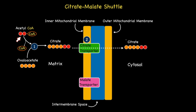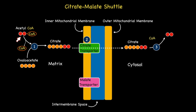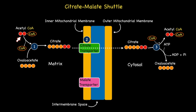Once citrate is in the cytosol it enters into step three. Here it offloads its two carbon passengers which combine with CoEnzyme A to regenerate Acetyl CoA while also reforming oxaloacetate. In short, this is a reversal of the first step and requires energy in the form of ATP to allow it to go to completion.